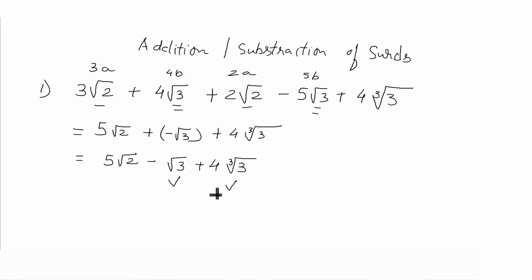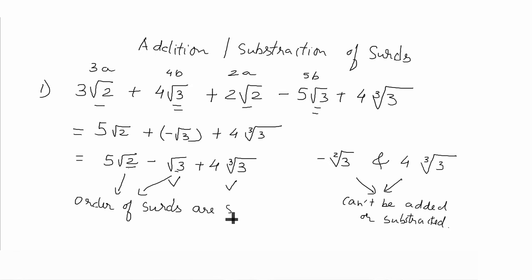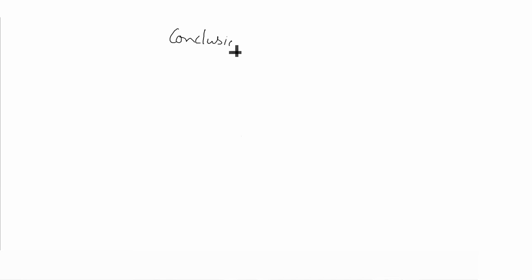root 3 and cube root of 3 cannot be combined as the order here is 2. And for 4 into cube root of 3, the order is 3. So, if we add or subtract, the orders must be the same but radicand value is different—in one place a value is 2 and in the other place 3. Let us see the conclusion.